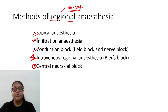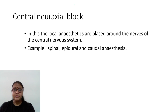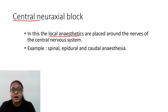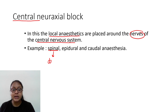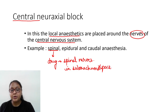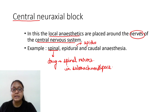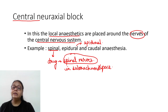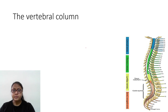The central neuraxial block involves placing local anesthetic around the nerves of the central nervous system. For example, in spinal anesthesia the drug is deposited around spinal nerves in the subarachnoid space. If the drug is deposited to block the spinal nerve in the epidural space, that is epidural anesthesia. So in both cases we are blocking the spinal nerves.